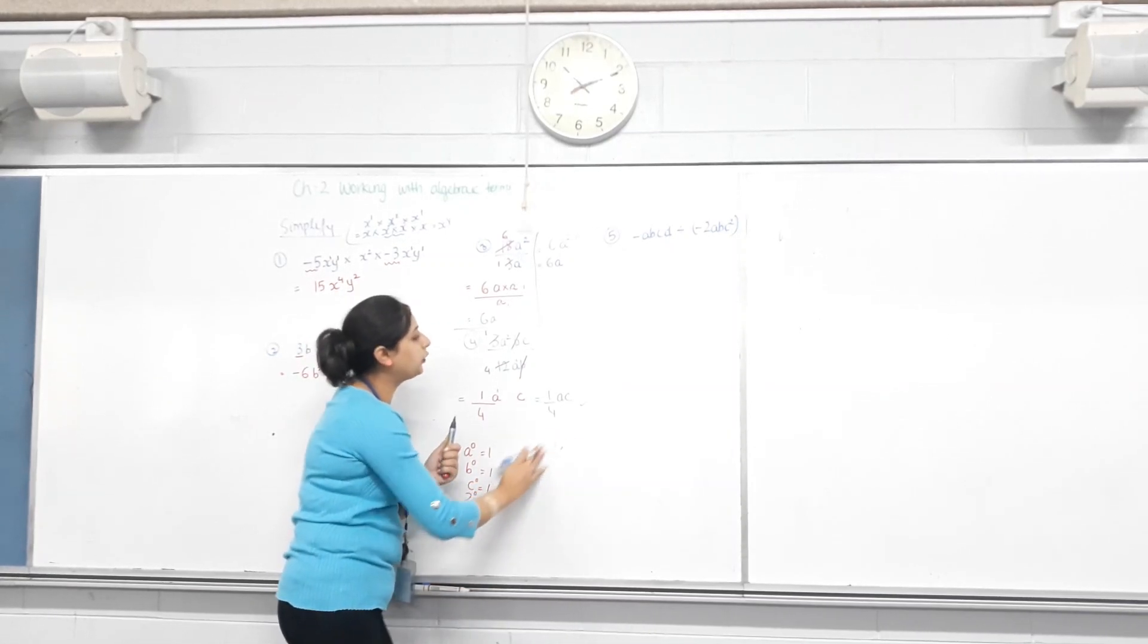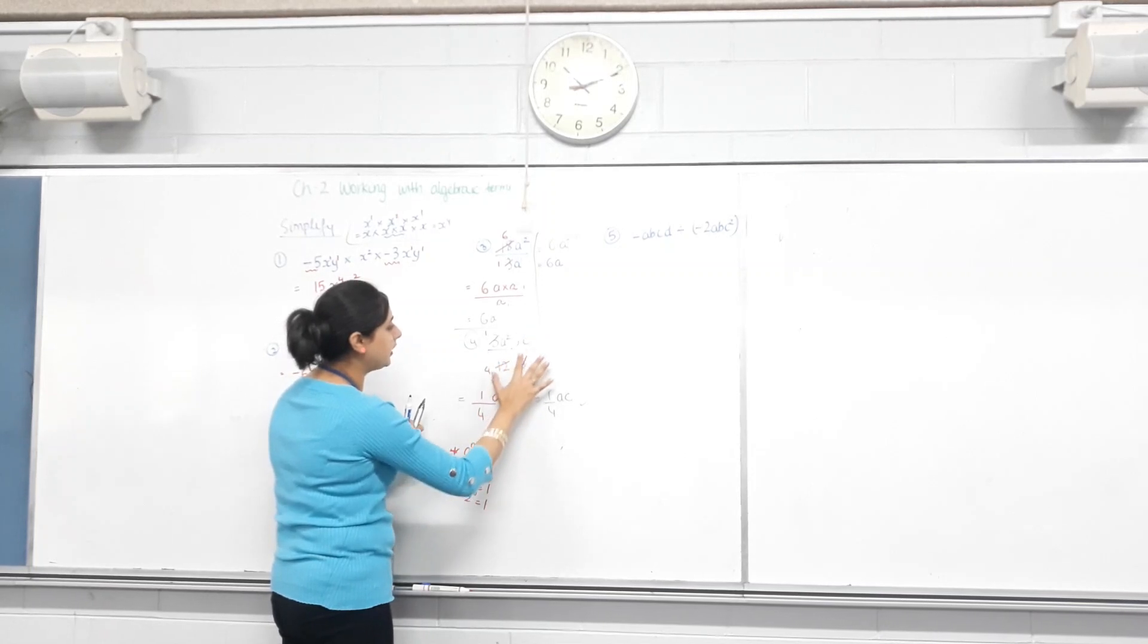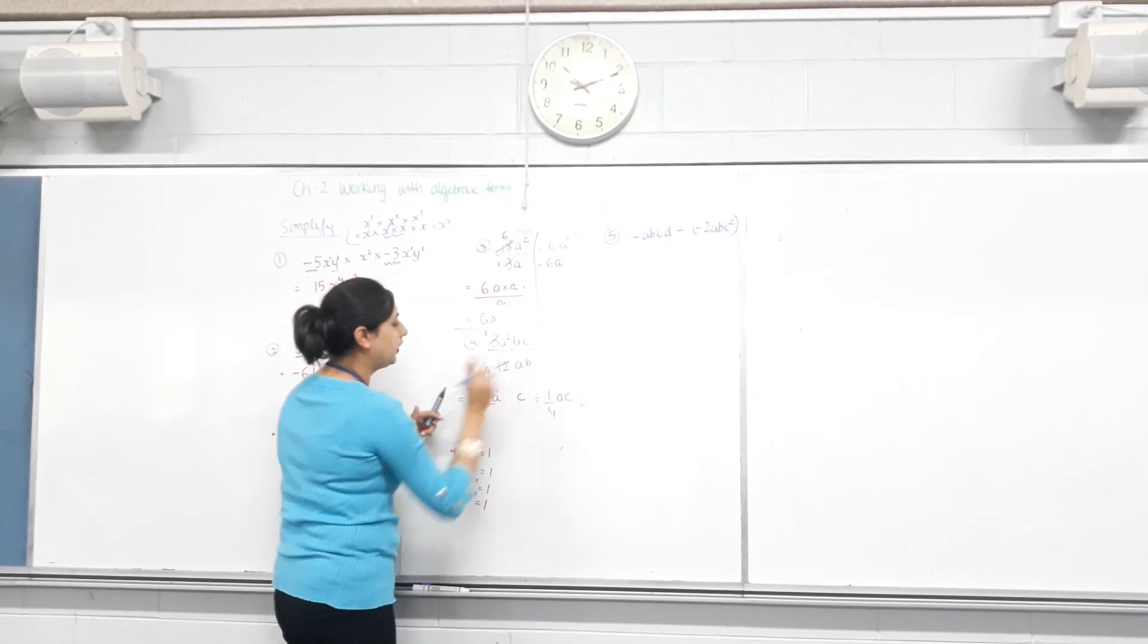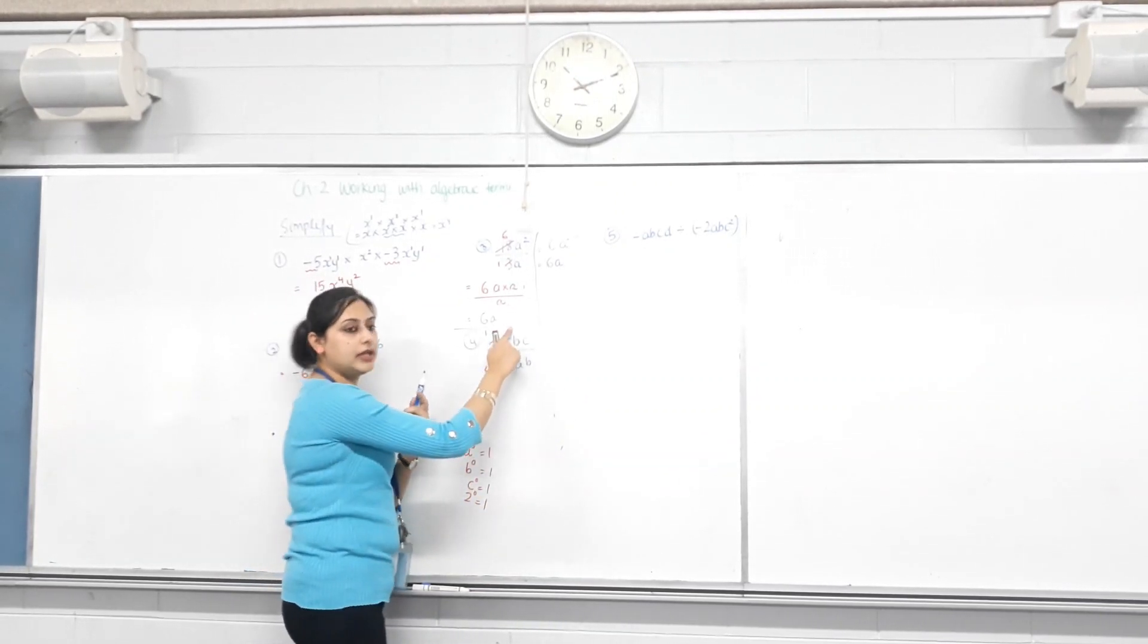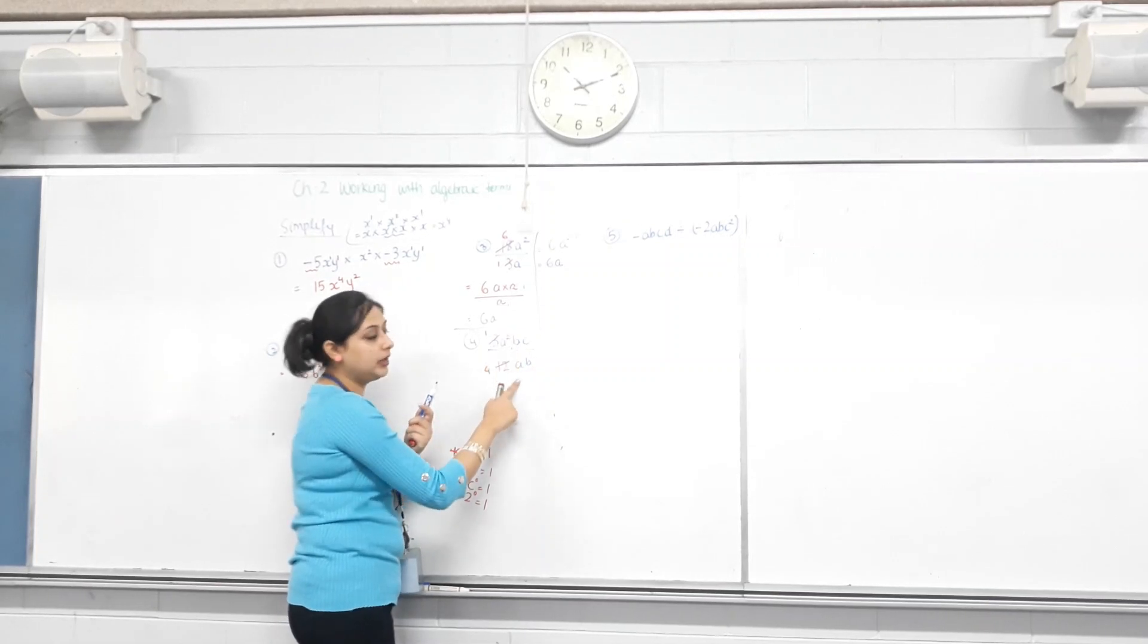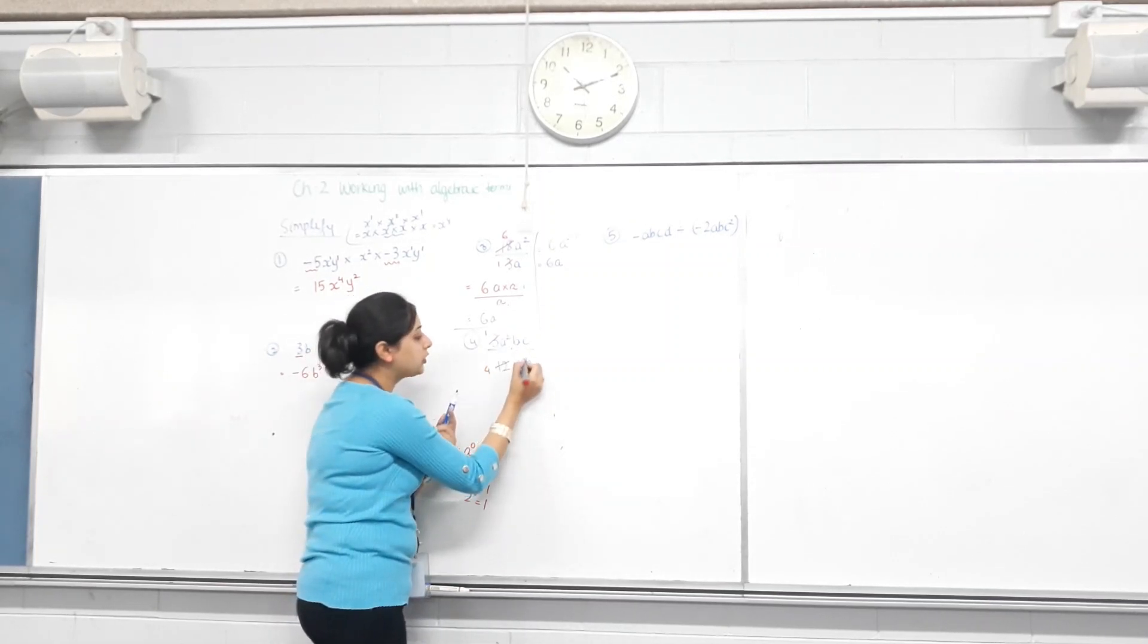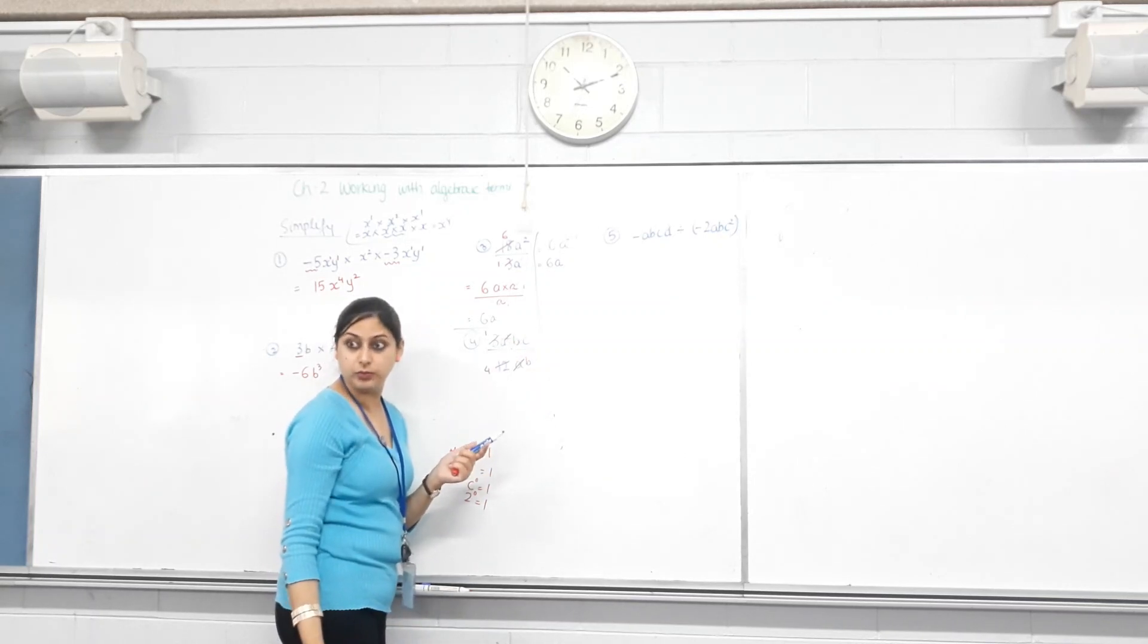Another method that you can use is, how many A's are on the top? Two. How many are at the bottom? One. So, you can cancel one. If you've cancelled one, doesn't one A remain on the top? Yes. Because there's one more.